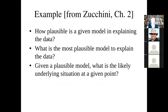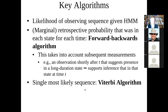We want to ask how plausible it is that a given HMM explains this data, what's the most plausible model, and given a plausible model, what's the likely underlying situation at a given point? There are two algorithms used in hidden Markov models: the forward-backward algorithm and the Viterbi algorithm.